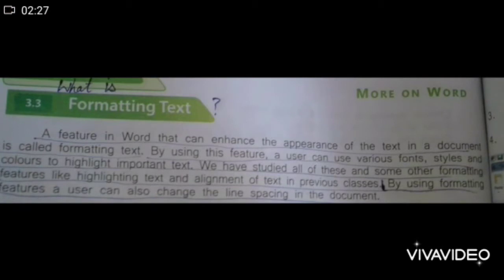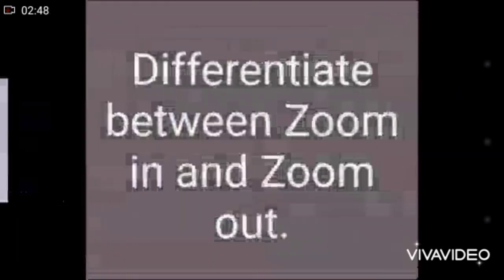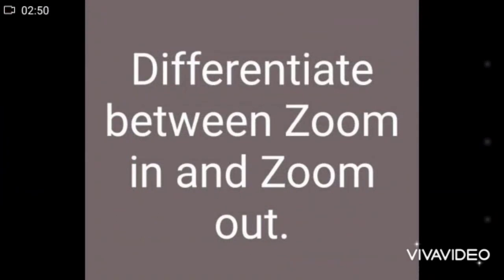The second part is text editing. The process of adding, removing, and rearranging text in a document is called text editing. In order to edit text, first it is selected and then any operation is performed.